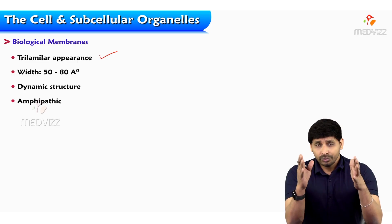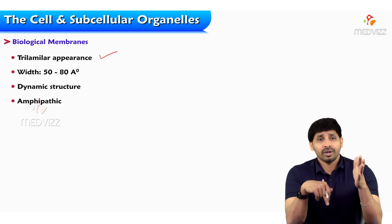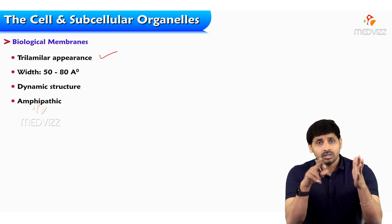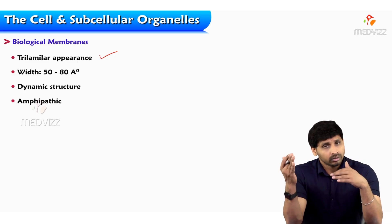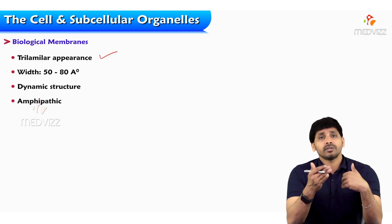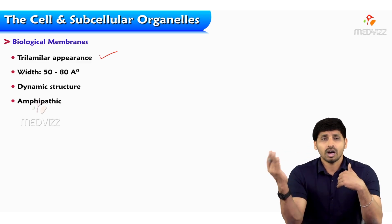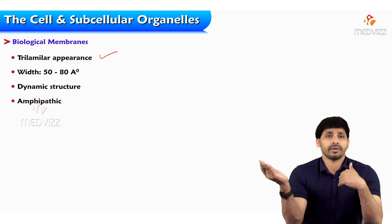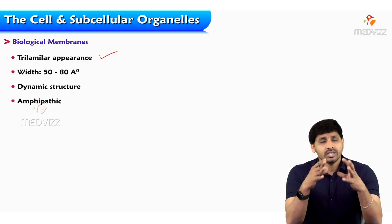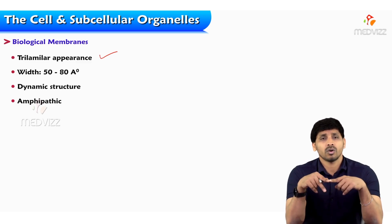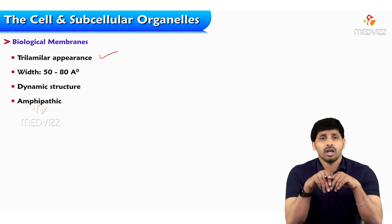Consider the Indian map — there are borders, and what is within those borders belongs to India, while outside belongs to other countries' territory. In the same way, each and every cell in our body has a proper territory, which is marked by the biological membranes.